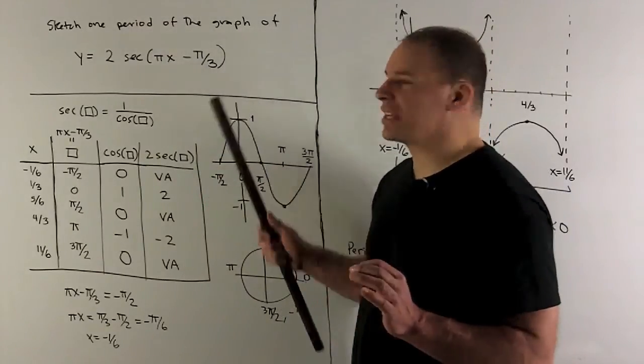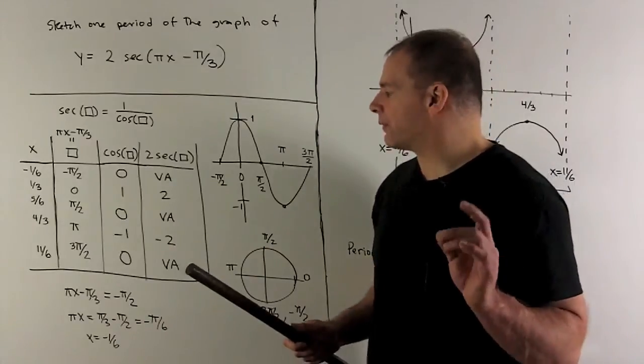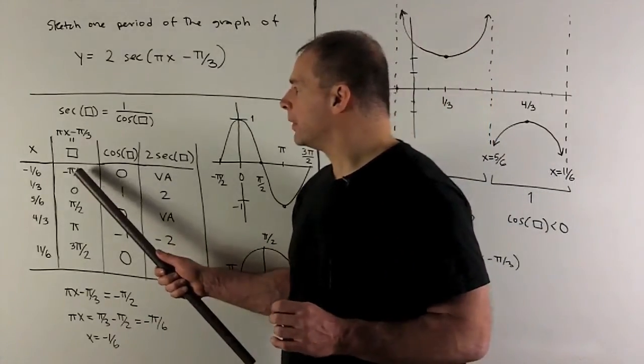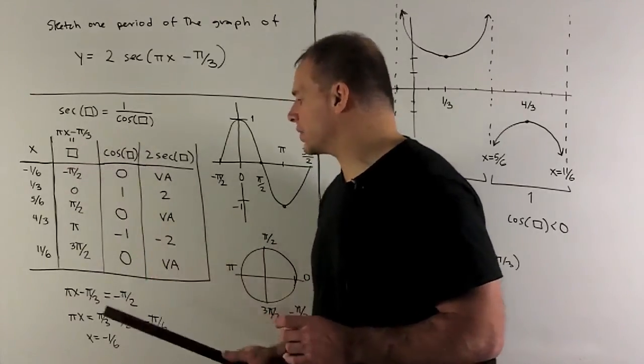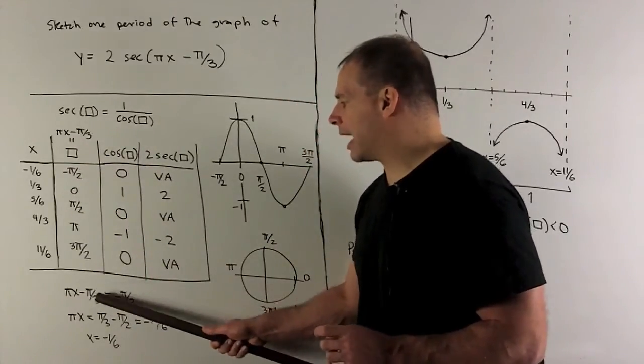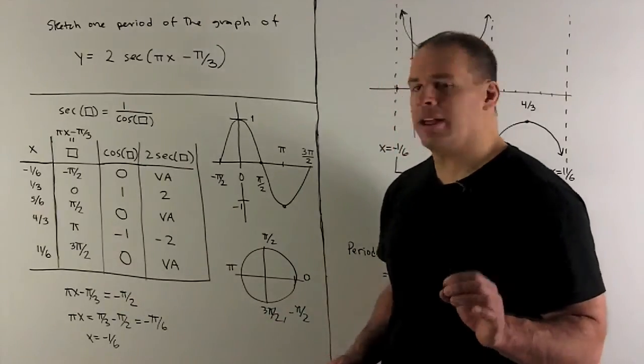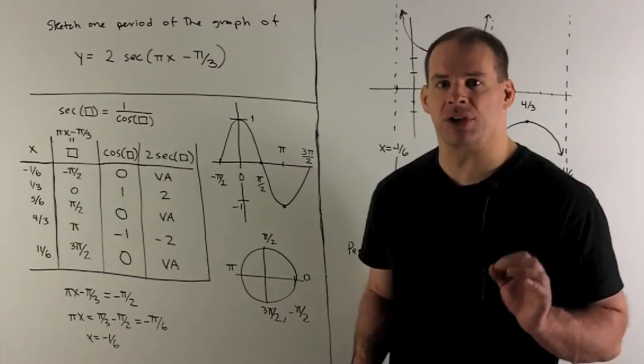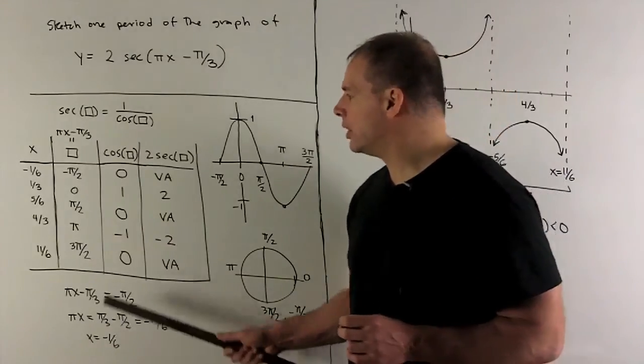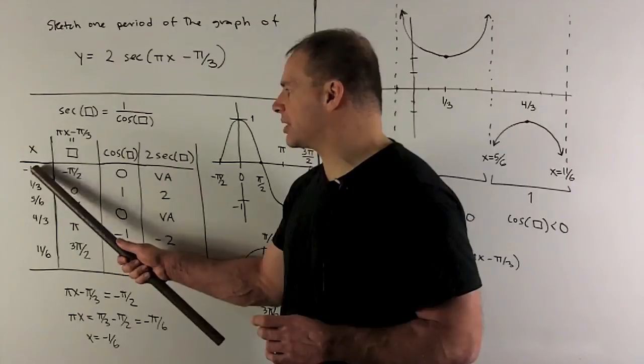Now I'm going to solve for x. For instance, if I take the first one, I'm going to set πx - π/3 = box. Box = -π/2. Push the -π/3 to the other side: πx = π/3 - π/2 = -π/6. Divide by π: x = -1/6. That's going to mean if I put -1/6 in here, a vertical asymptote comes out.